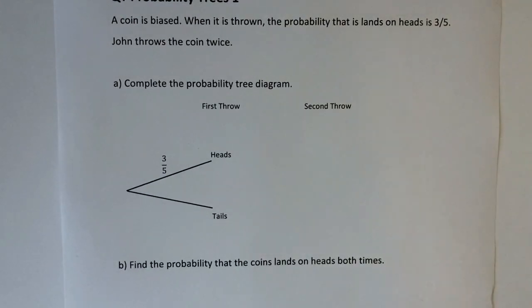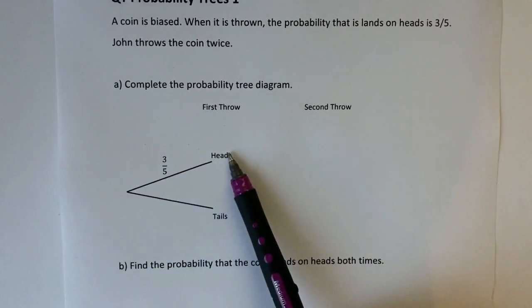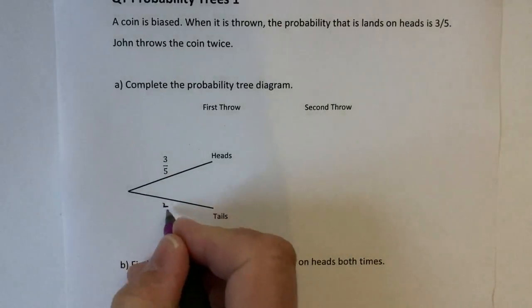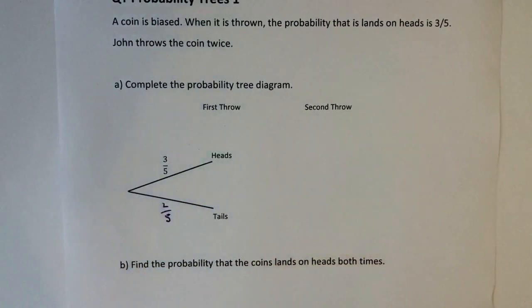Okay, so what they've given you is the first throw and what it says is that three out of five times it lands on heads, so therefore for it to land on tails it must be two out of five times.